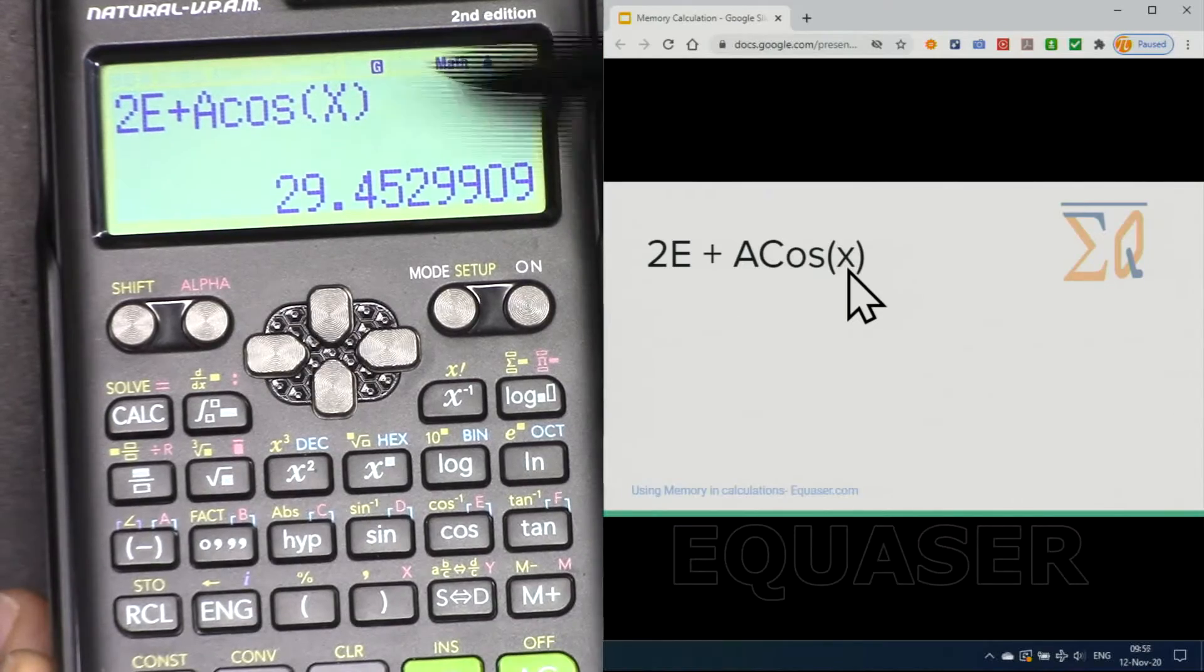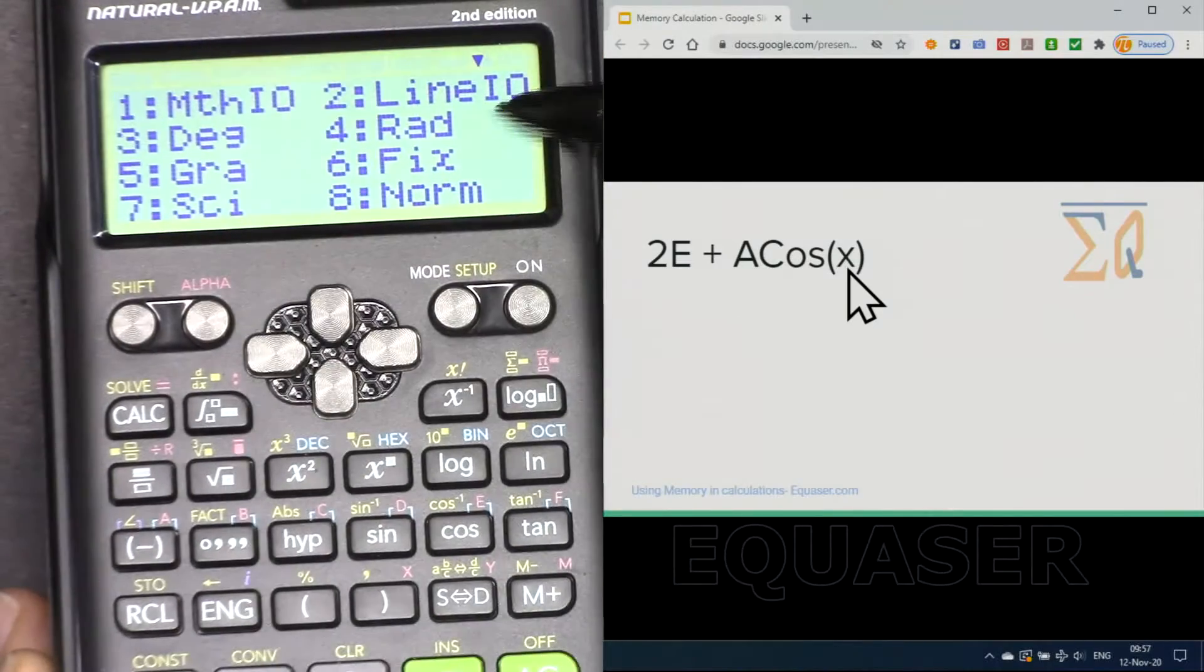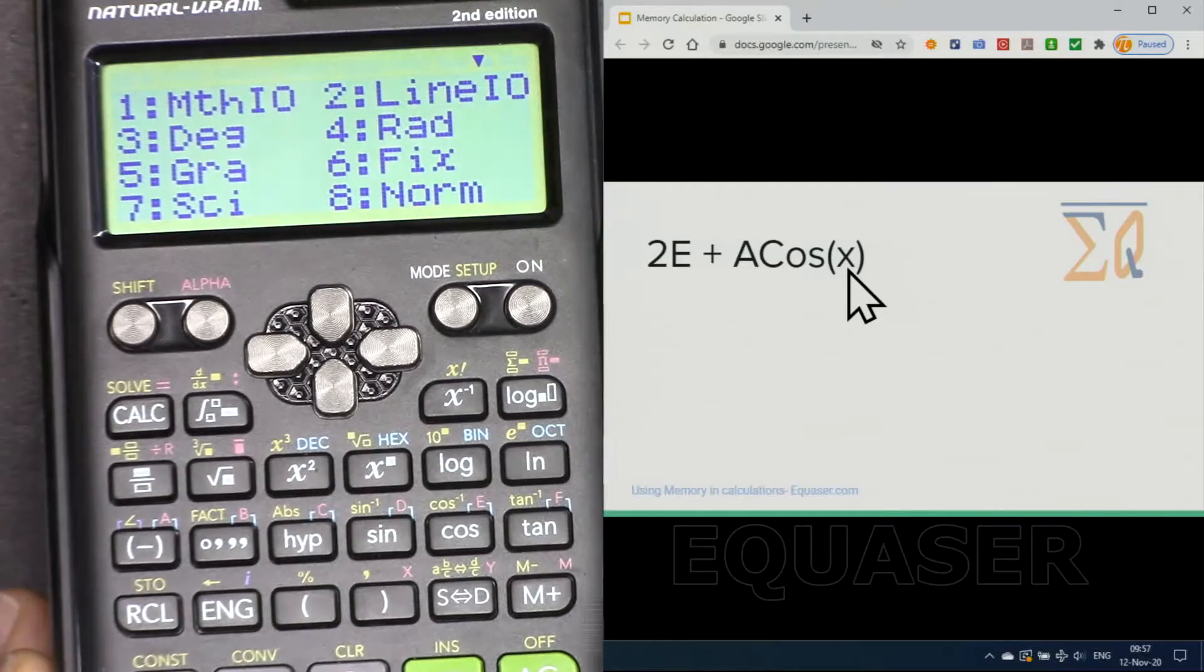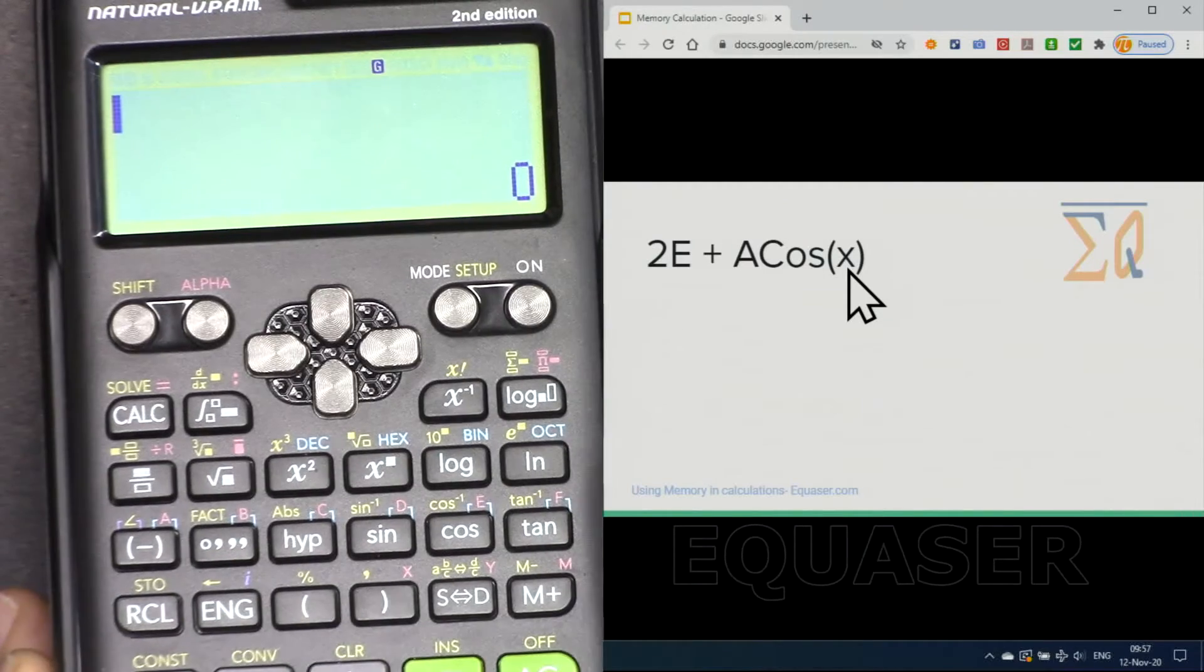If you want to change it press shift setup and from here make it radian and then you will do the calculation.